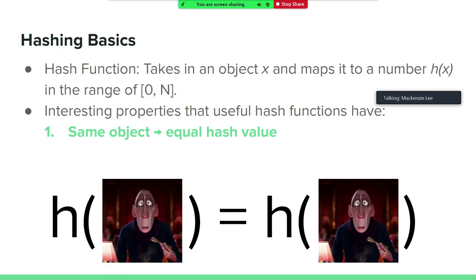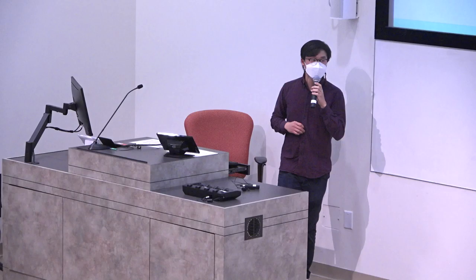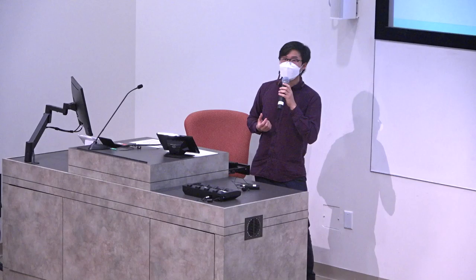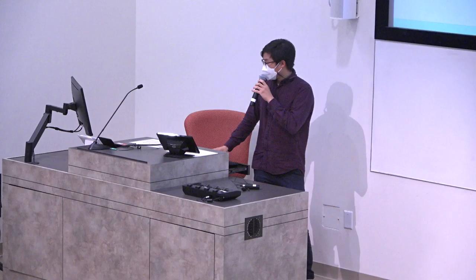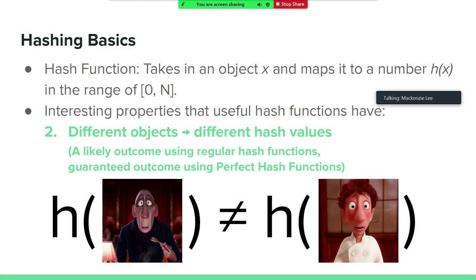So why would we want to get a number in the first place? Formally speaking, hashing is taking in an object and mapping it to a number h(x) in the range zero to n. Hash functions can have some interesting properties. For example, the same object will lead to the same hash value. So if I have an object that hashes to one, and a different object that hashes to two, I know that those two objects have to be different — I know just by that number they're going to be different. Another useful property is if different objects hash to different values. There is a class of hash functions called perfect hash functions that actually guarantee this. This is useful because then if two objects have the same hash value, we know for sure that the two objects are going to be the same.